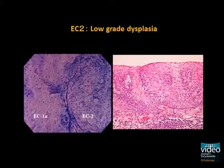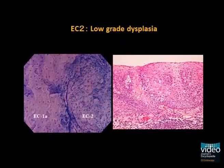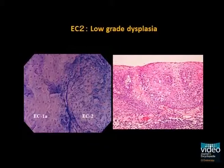The left half is normal epithelium and the right half is low-grade intra-epithelial neoplasia. This is categorized as a borderline region, EC2. Histology shows low-grade intra-epithelial neoplasia.